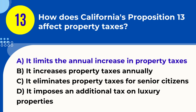Explanation. California's Proposition 13, passed in 1978, limits the annual increase in property taxes to no more than 2% unless the property is sold or new construction is completed. This proposition significantly impacted how property taxes are calculated in California.